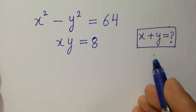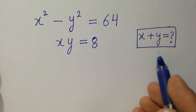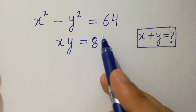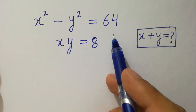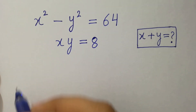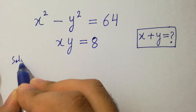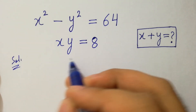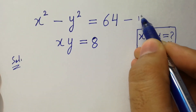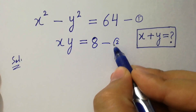Hello friends. Find the value of x plus y if x squared minus y squared equals 64 and xy equals 8. Let's have a solution here. Let's take this as the first equation and this as the second equation.